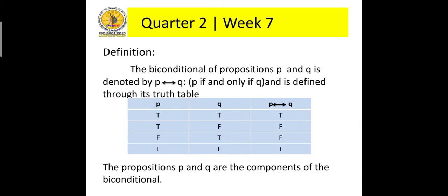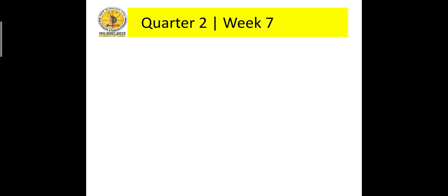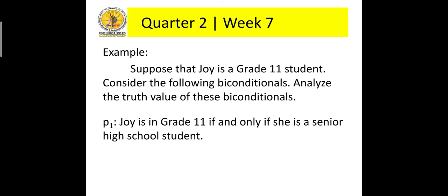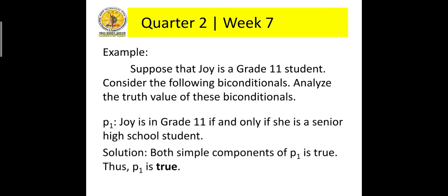The biconditional of propositions P and Q is denoted by 'P if and only if Q,' and is defined through its truth table, as shown below. The propositions P and Q are the components of the biconditional. Example: 'Joy is in grade 11 if and only if she is a senior high school student.' Both simple components are true. Thus, the biconditional is true.